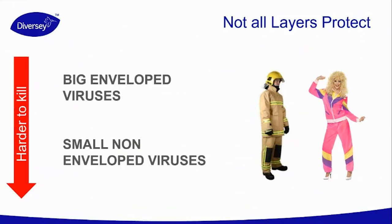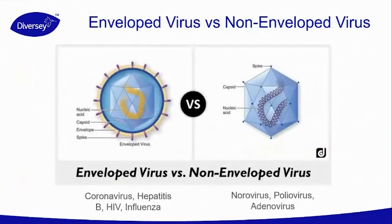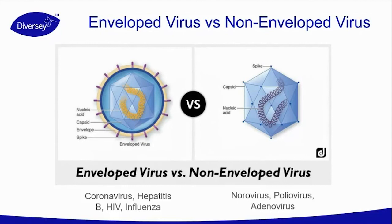It's important to understand these two types of viruses because it's linked with European norms and the capability of a disinfectant to remove either enveloped viruses only or both types. You can see a schematic picture of both types: on the left, enveloped viruses with the outer layer, capsid, and envelope; on the right, non-enveloped viruses without this envelope. Reference non-enveloped viruses are norovirus, poliovirus, and adenovirus. For enveloped viruses, examples include coronaviruses, hepatitis, influenza, and HIV. Over 5000 species have been identified, made up of either DNA or RNA, and surrounded by a protective protein coat called a capsid.